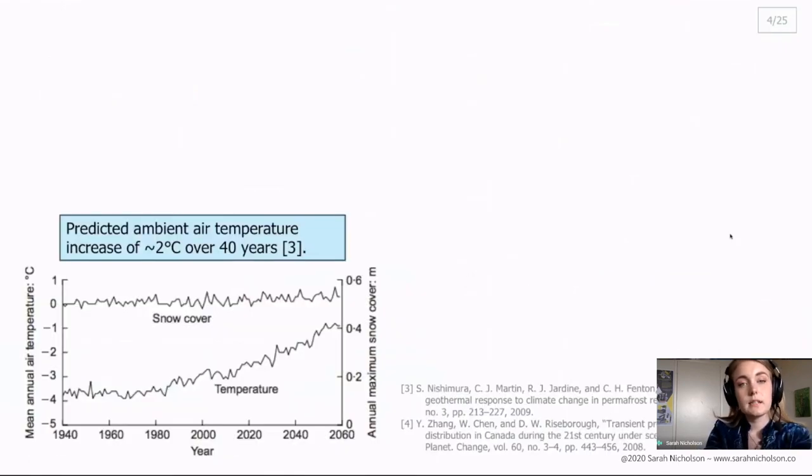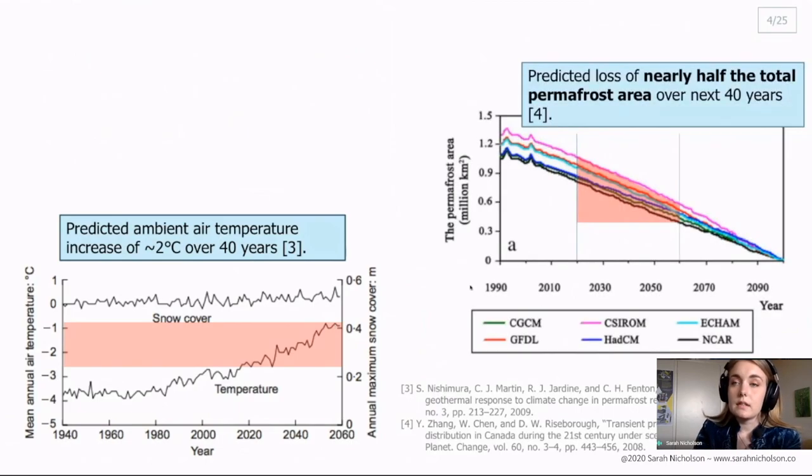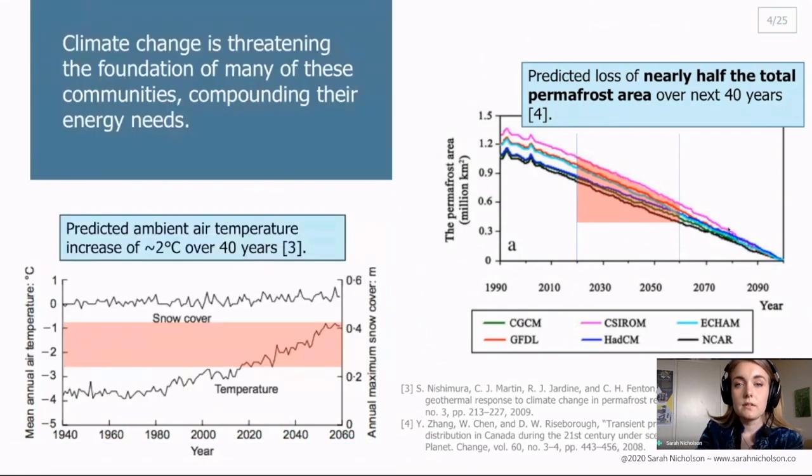Unfortunately, it's predicted that this climate change will continue. So here the ambient air temperature is predicted in this area to increase again by two degrees over 40 years. And this will lead to a loss of half of the total permafrost area in Canada over the same amount of time. So these communities not only face an energy crisis, they also have an issue with climate change.